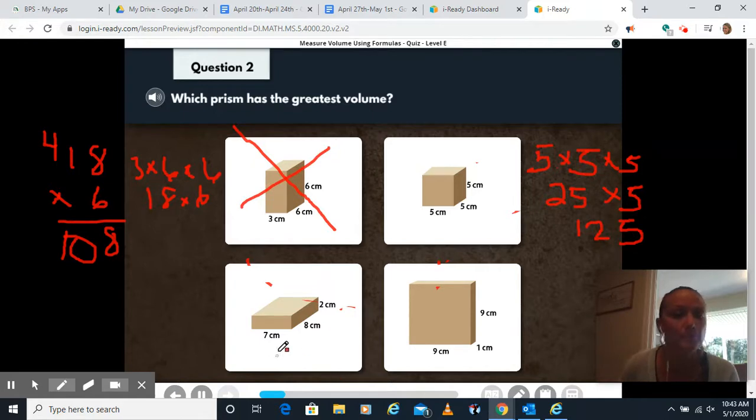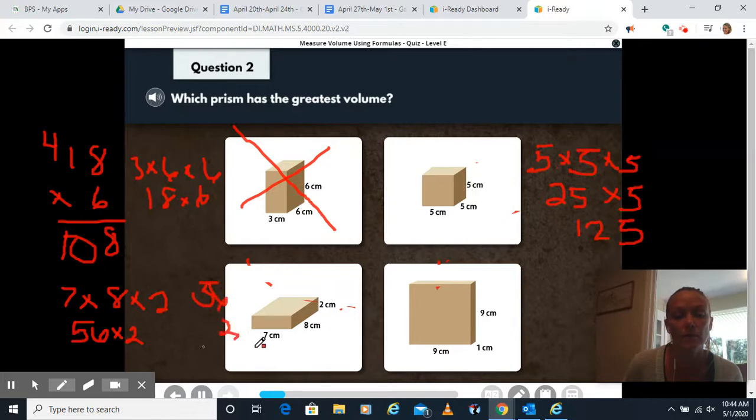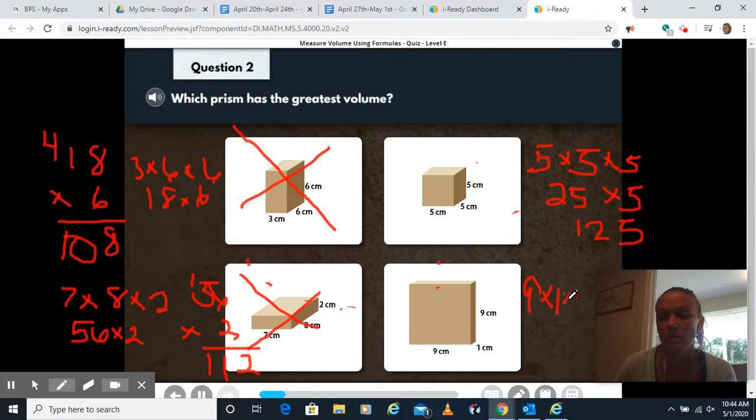So now we can get rid of this one because we know this one's already bigger. Now we have seven times eight times two. Seven times eight, if you're not sure, remember to use your multiplication chart if you need it, is 56 times two. Six times two is 12, carry the one. Two times five is 10 plus one is 11. So I have 112 there. So that 108 is gone. 125 is still greater. And our last one, we have nine times one times nine, nine times one is nine times nine. We have 81. So the one with our greatest volume is going to be 125.